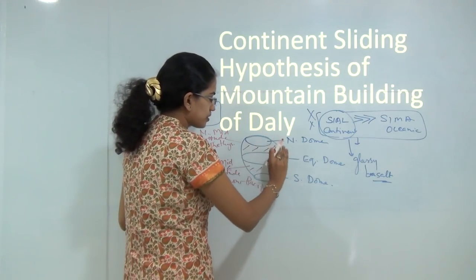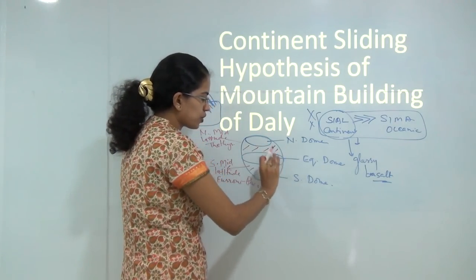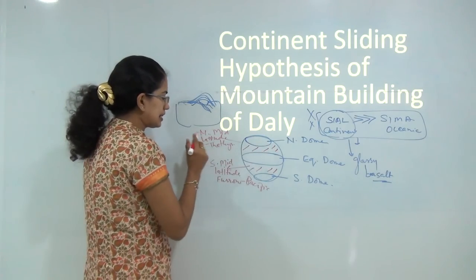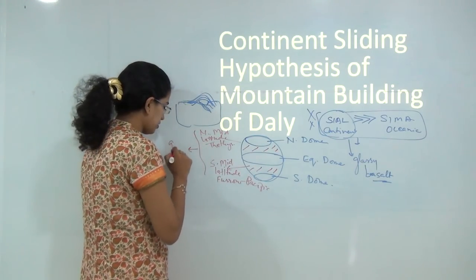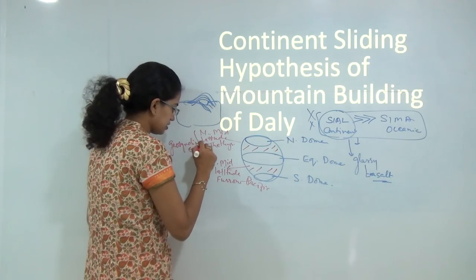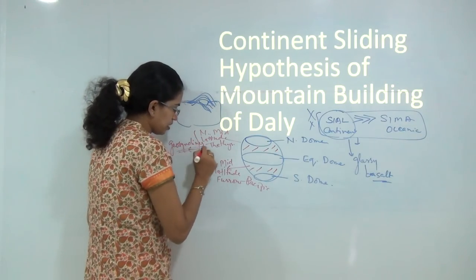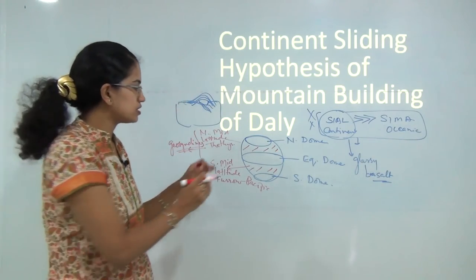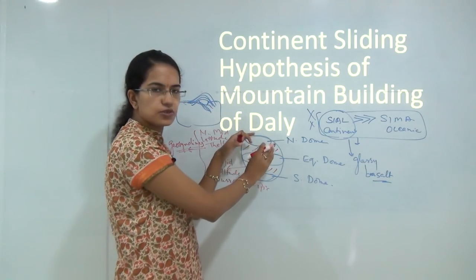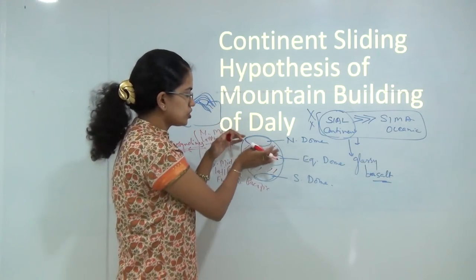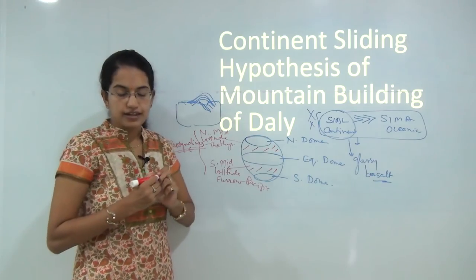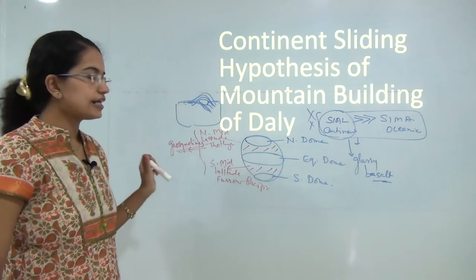Daly also said that huge water bodies exist between the three domes, and these water bodies were the geosynclines - which was not exactly the case, because if these were the only geosynclines, all mountains should appear only within this range. These were the major criticisms faced by Daly.